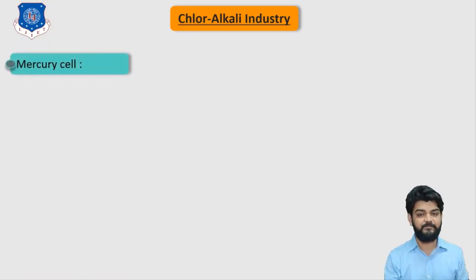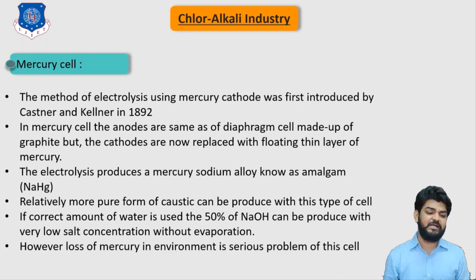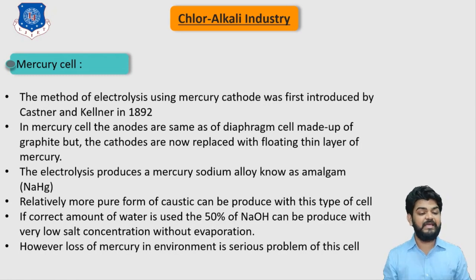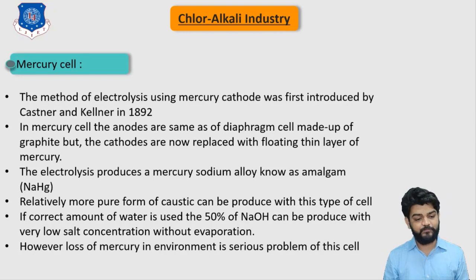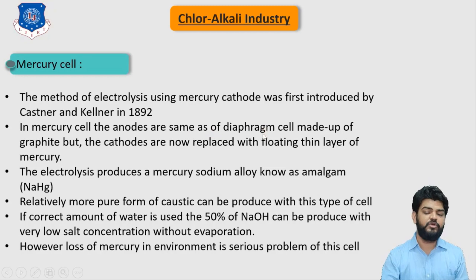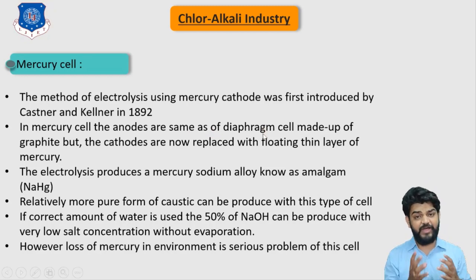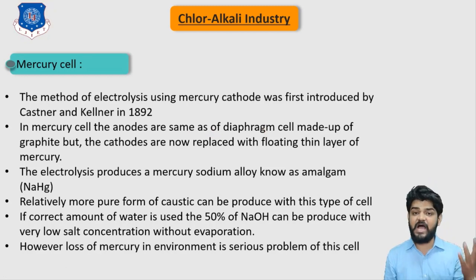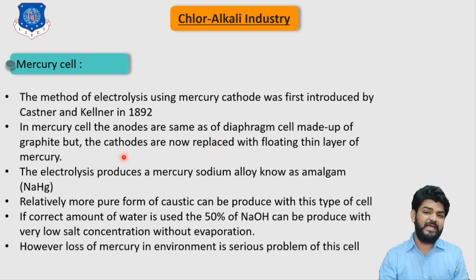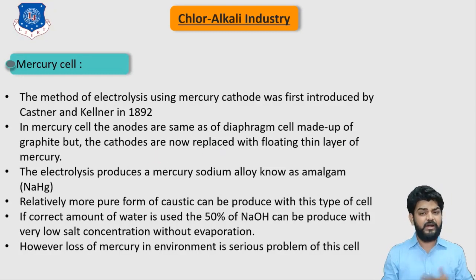Now let's understand the mercury cell in detail. The method of electrolysis using a mercury cell was invented by Castner and Kellner in the year 1892. In the mercury cell, the anode material is the same as in the diaphragm cell — generally graphite — but the cathode is made up of floating mercury, replacing the cast iron cathode.